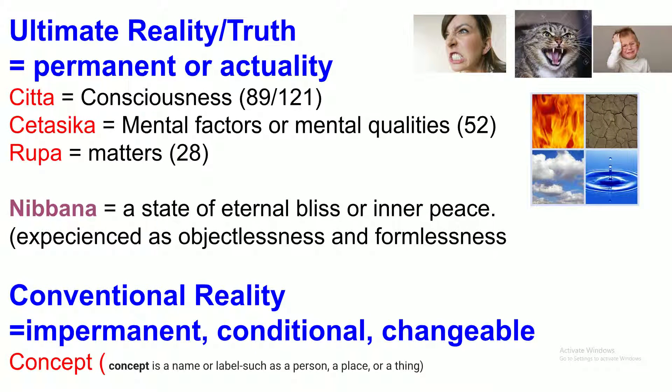We have to know the two realities. One is ultimate reality, another one is conventional reality. Ultimate reality in Pali we call Paramatthasa. It is permanent and it really exists, is never changed in its intrinsic nature. There are four types: Citta, Cetasika, Rupa and Nibbana.